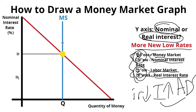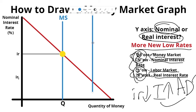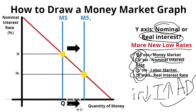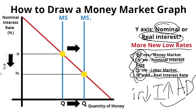Since we're using expansionary monetary policy — which could be buying bonds, lowering the discount rate, or reducing the reserve ratio — money supply will shift to the right. We draw this by literally shifting the MS line to the right. As we can see, quantity has increased and interest rates have lowered.